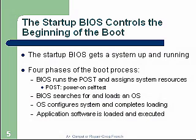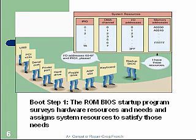Applications are loaded next — application software is loaded and then executed. We might be using a browser to get onto the internet; that could be our application. Here's a diagram from the book: boot step one, the ROM BIOS startup program surveys the hardware resources and needs, and assigns system resources to satisfy those needs. You really need to understand what system resources are, why they're assigned to each component, and why those are used to communicate with the CPU. Resources need to be assigned so the CPU knows which component has which resource, so there won't be any conflicts.